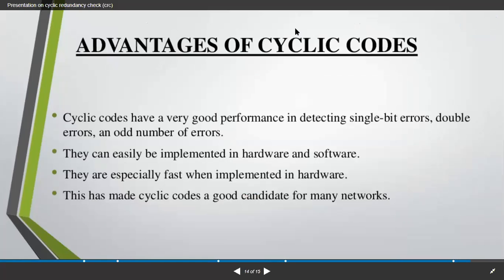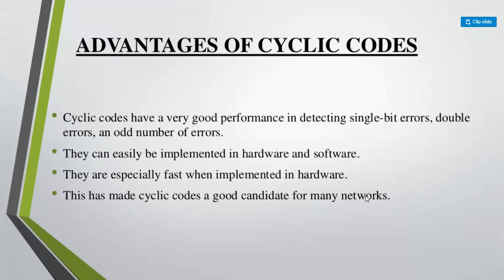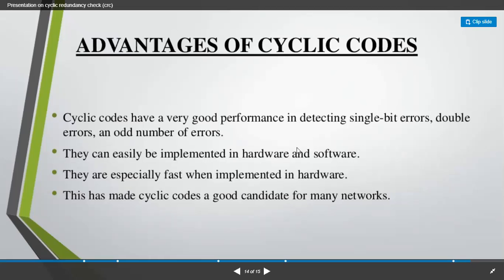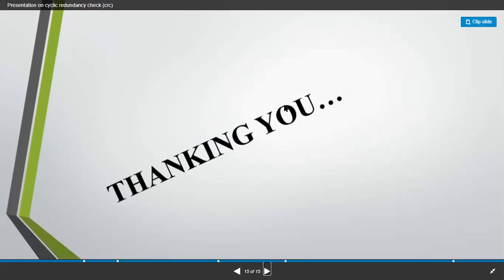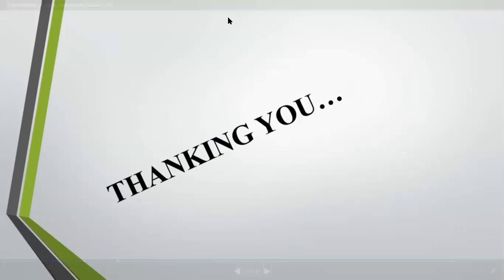The advantages of cyclic codes are: first, good performance in detecting any single bit of data, and you can detect double errors and odd numbers of errors as well — because we are checking twice, it gives good performance. Second, it can be easily implemented in hardware and software. Third, it is especially fast when implemented in hardware. Also, cyclic codes are a good candidate for many networks. For more examples, find questions from your previous year question paper and try to solve all the questions.